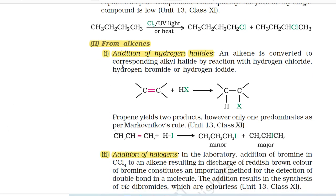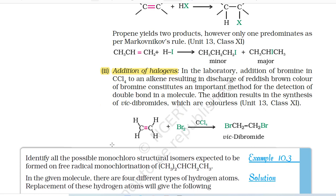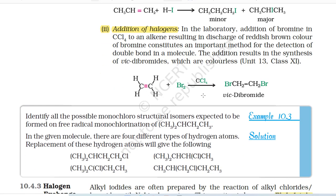Second, from alkenes. Addition of hydrogen halides: An alkene is converted to the corresponding alkyl halide by reaction with HCl, HBr, or HI. Propene yields two products; however, only one predominates as per Markovnikov's rule. Addition of halogens: In the laboratory, addition of bromine in CCl4 to an alkene results in discharge of the reddish-brown color of bromine, constituting an important method for detection of double bond. The addition results in the synthesis of vicinal dibromides, which are colorless. For example: ethene + Br2 (CCl4) → BrCH2CH2Br (vicinal dibromide).